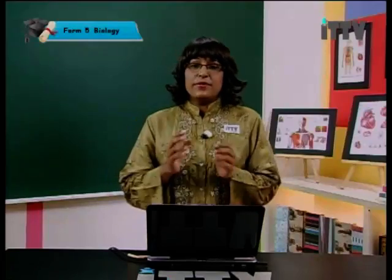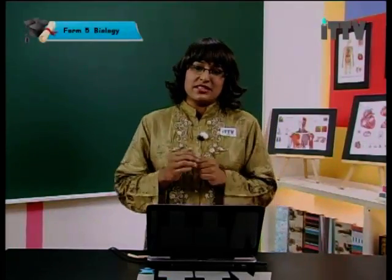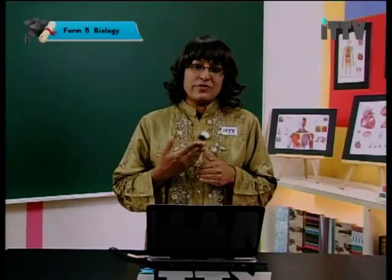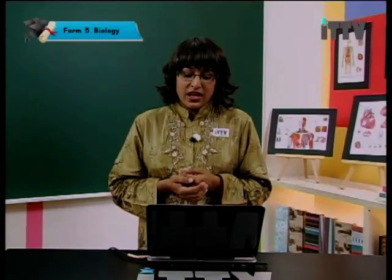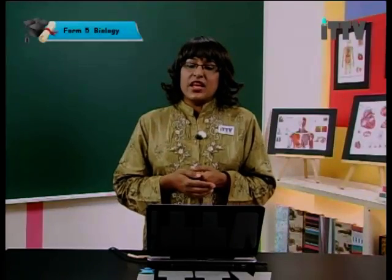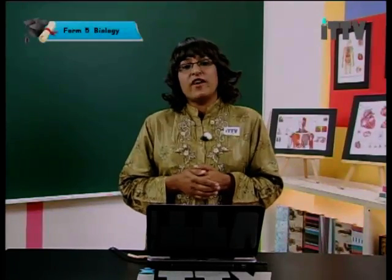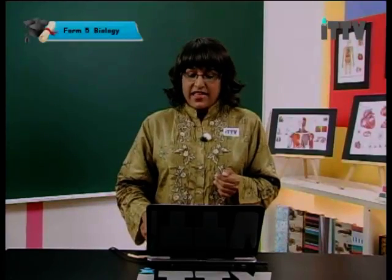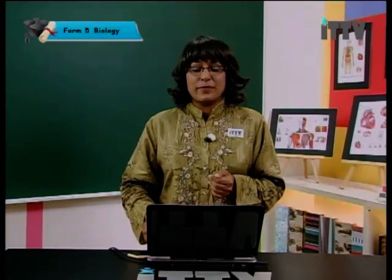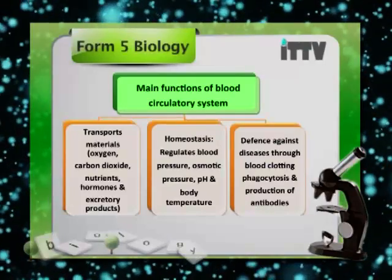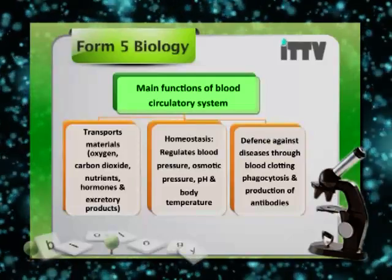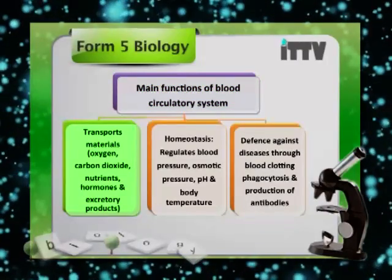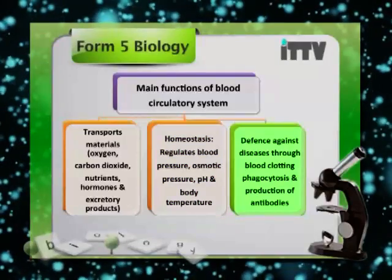Blood is the medium of transport in many multicellular organisms, including humans and animals such as elephants, invertebrates, reptiles, amphibians, and birds. In a normal human body we have about 4.7 to 5 liters of blood, which forms one-eleventh of a human body's weight. Now let us take a look at the main functions of the blood circulatory system.